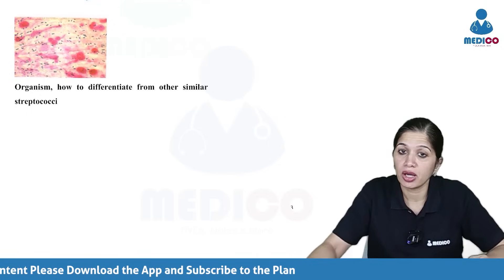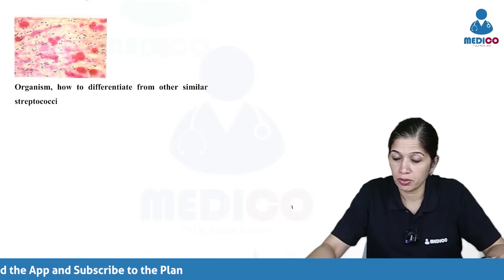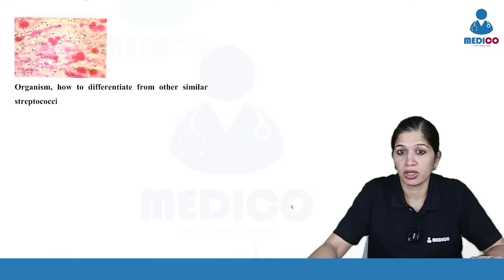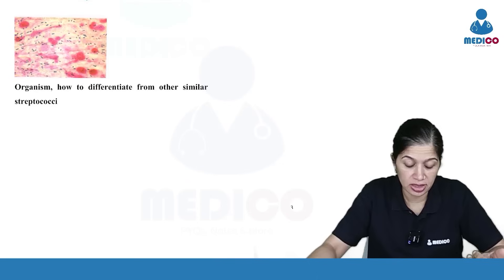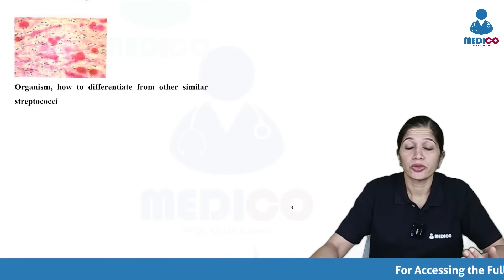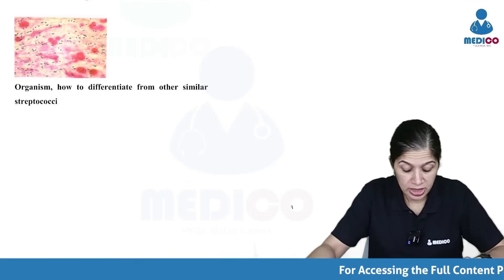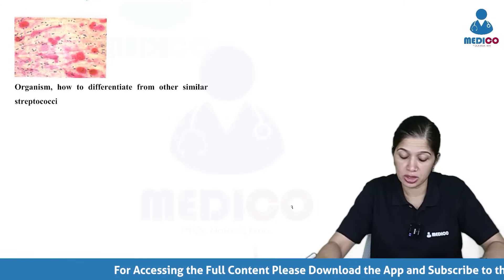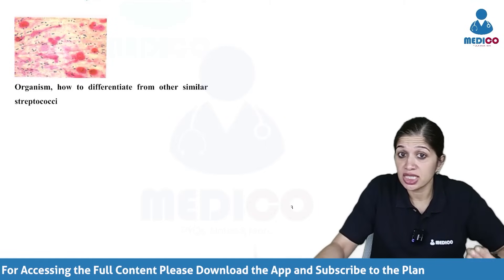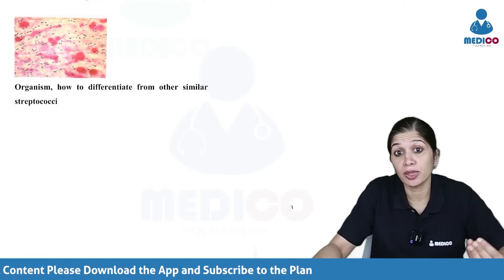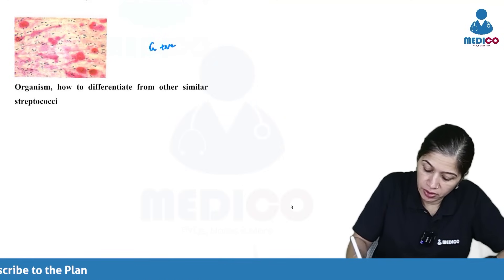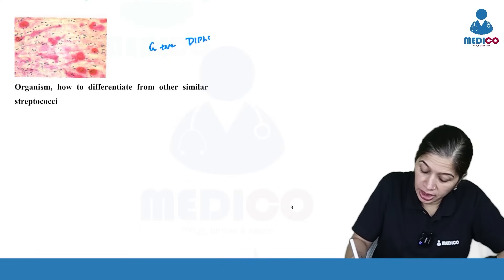This is a CSF picture of a child with symptoms suggestive of meningitis. You can see pus cells and gram-positive cocci — and they are not seen singly, they are actually diplococci. So you are seeing gram-positive diplococci.